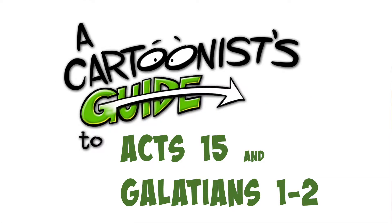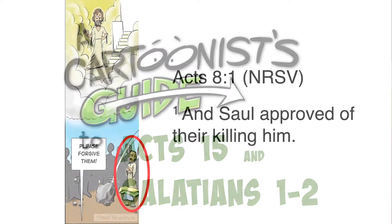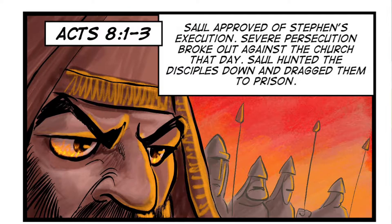Welcome to Cartoonist's Guide to Acts 15 and Galatians 1 through 2. We begin with the story of Saul in Acts chapter 8 verse 1, which is the end of the story of Stephen — the brutal killing of Stephen in the streets. Acts chapter 8 verse 1 says, 'And Saul approved of their killing him.' Then it goes on to say that severe persecution broke out against the church that day, and Saul hunted the disciples down and dragged them to prison. It was a reign of terror from Saul.